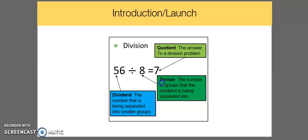The 8 is the divisor, the number of groups that the dividend is being separated into. And 7 is the quotient, the answer to a division problem. Now we're ready to go into today's lesson.